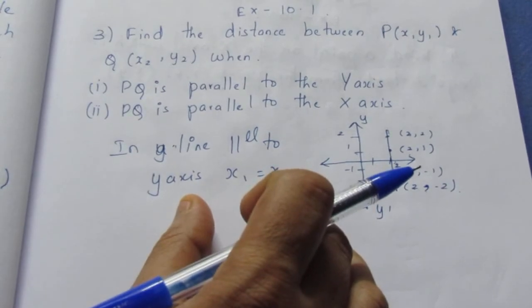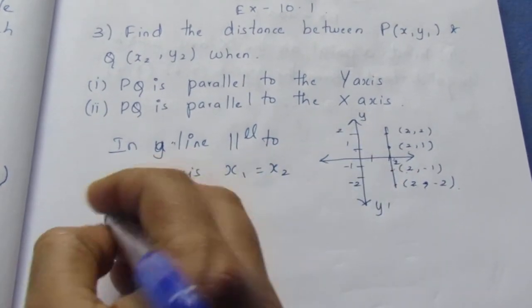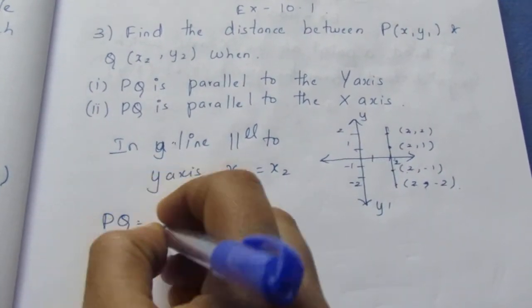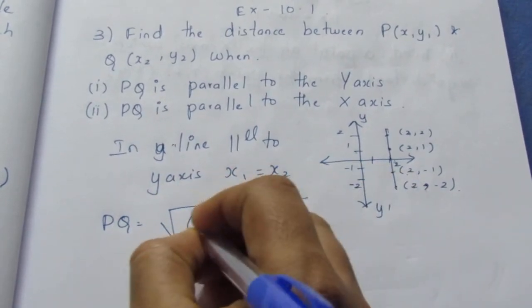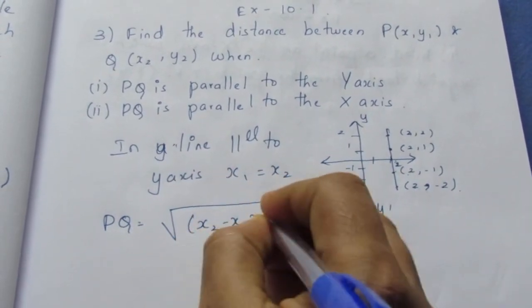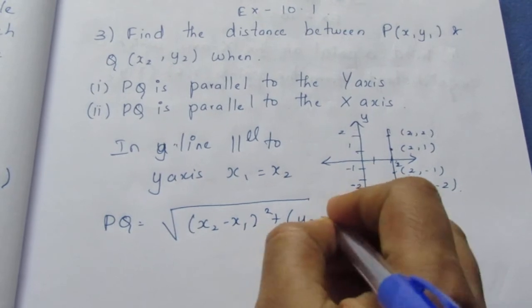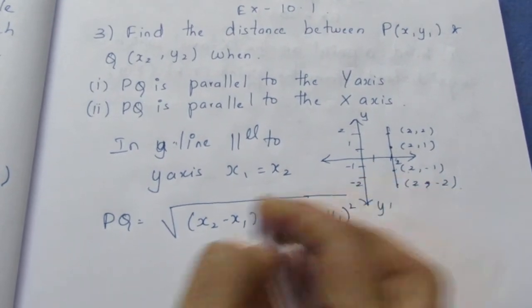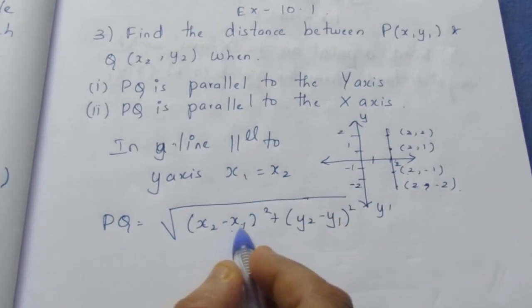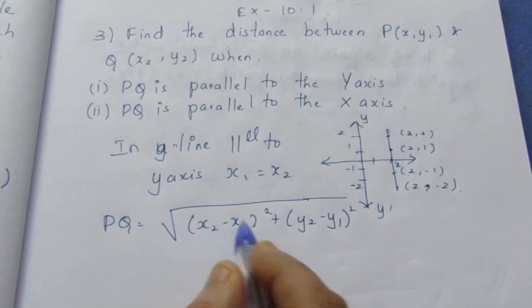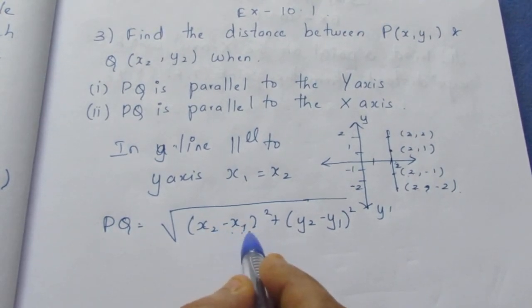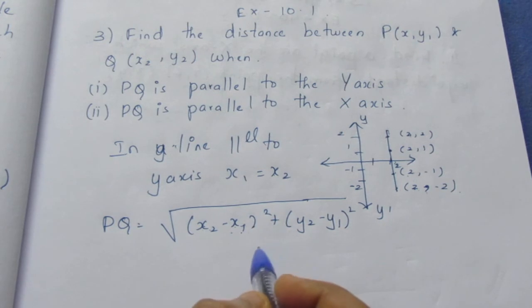Now we know that x1 is equal to x2 for distance PQ. We know the distance formula is √[(x2 - x1)² + (y2 - y1)²]. Just substitute the value. We know that these two are equal. You can directly say this to be equal to 0 because if I take this to be x2 then it becomes x2 minus x2 will become 0.